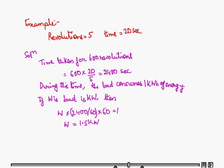So the solution is given like this. Time taken for 600 revolutions is 2400 seconds. During this time, the load consumes 1 kilowatt hour of energy. So if W is the load, W times 2400 over 60 times 60 equals 1. So W comes out to be 1.5 kilowatt. So the load is 1.5 kilowatt.